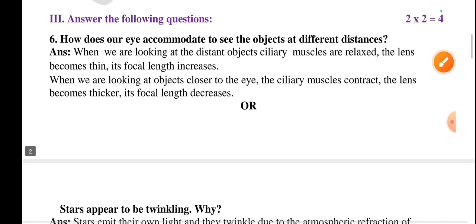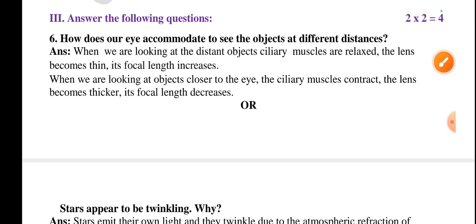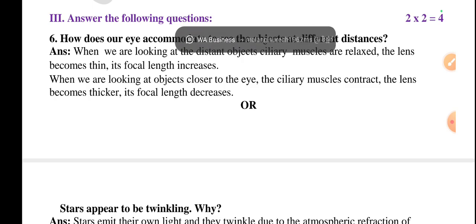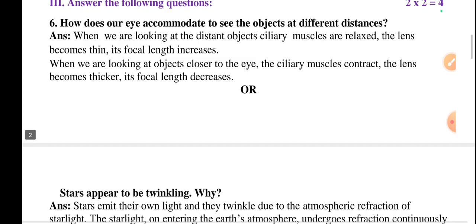Question number three section: Answer the following questions. Sixth one - How does our eye accommodate to see the objects at different distances? Two mark questions, total two, so two into two is four. When we are looking at distant objects, ciliary muscles are relaxed, the lens becomes thin, its focal length increases. When we are looking at objects closer to the eye, the ciliary muscles contract, the lens becomes thicker, and the focal length decreases. Because of this, it accommodates.